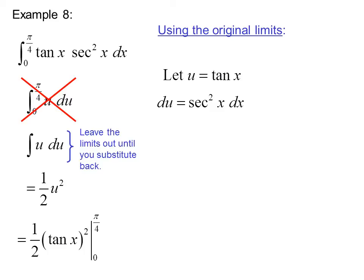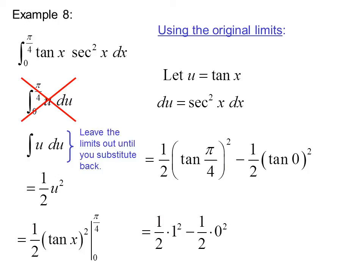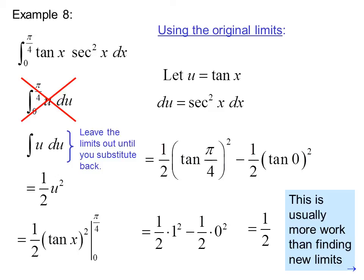So we get 1 half u squared. Then we substitute and put the original limits back in. So we have 1 half tangent x squared from 0 to pi over 4. Or 1 half tangent pi over 4 squared minus 1 half tangent of 0 squared, which is 1 half times 1 squared minus 1 half times 0 squared, or 1 half. This is usually more work than finding new limits.